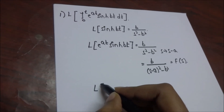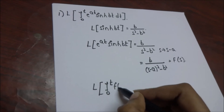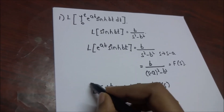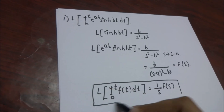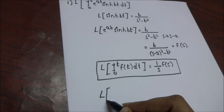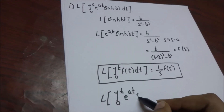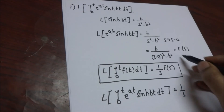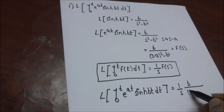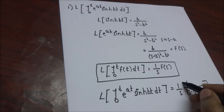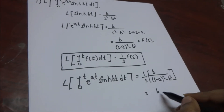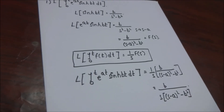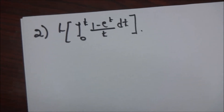We know that Laplace of the integral from 0 to t of f(t) dt is equal to 1/s into F(s). So the given problem, Laplace of the integral from 0 to t of e^(at)·sinh(bt) dt, is equal to 1/s into F(s), which gives b/[s·((s-a)² - b²)].